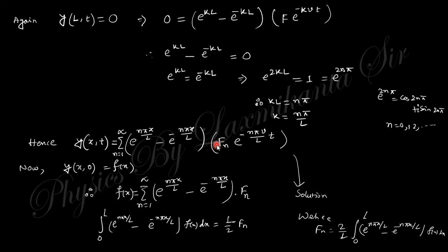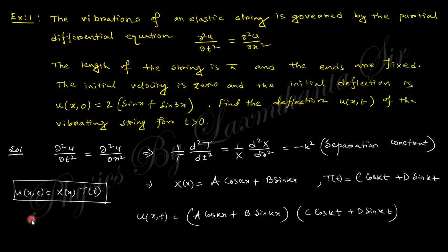The total solution is the summation over all n. At t = 0, this summation equals f(x). The Fourier series is used to find the coefficients f_n, given the initial condition f(x). This is the complete solution process. As an example, we consider the vibration of an elastic string where the wave velocity is taken as 1 in a suitable unit system, making the equation v² = 1.